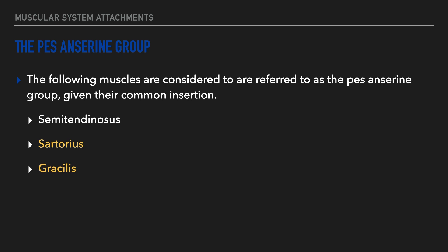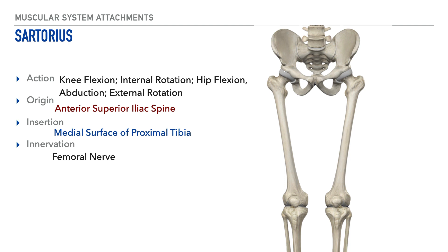Next up, we'll investigate the pes anserine group, and what makes these muscles unique is the common insertion they share. We've already identified the semitendinosus as a member of this group. The next muscle belonging to this group is the sartorius, whose action is knee flexion, internal rotation, hip flexion, hip abduction, and hip external rotation. Its origin is on the anterior superior iliac spine, its insertion is on the medial surface of the proximal tibia at the same location as the semitendinosus, and its innervation is the femoral nerve.